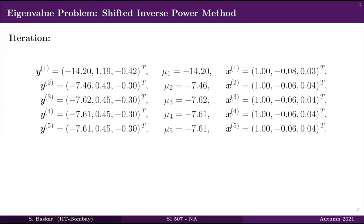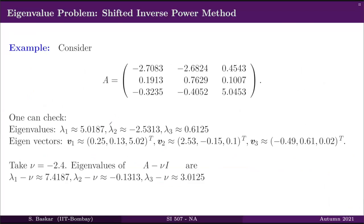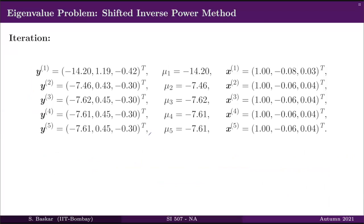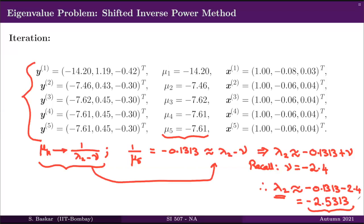Going back to check the actual value of lambda_2, we see that, at least up to the decimal places shown, it exactly matches what our shifted inverse power method gave us. So that's the idea of the shifted inverse power method. The main drawback, in addition to the drawbacks of the power method, is that one has to correctly fix the parameter nu.